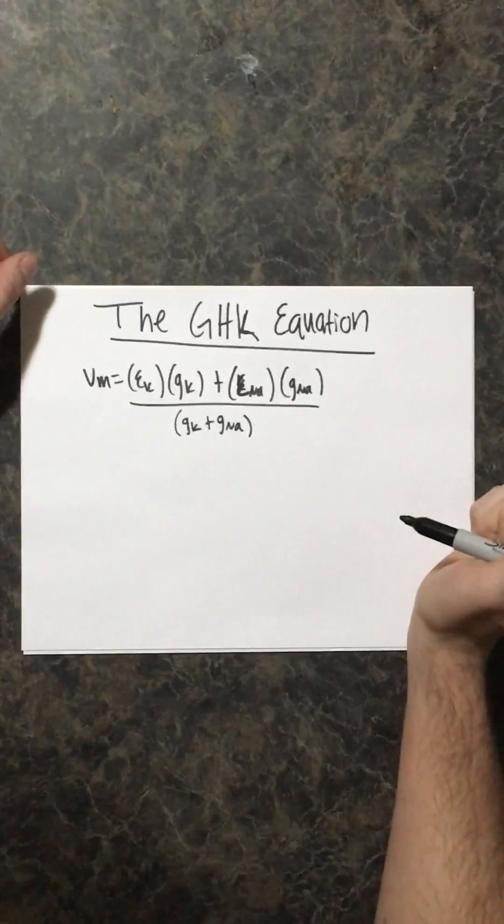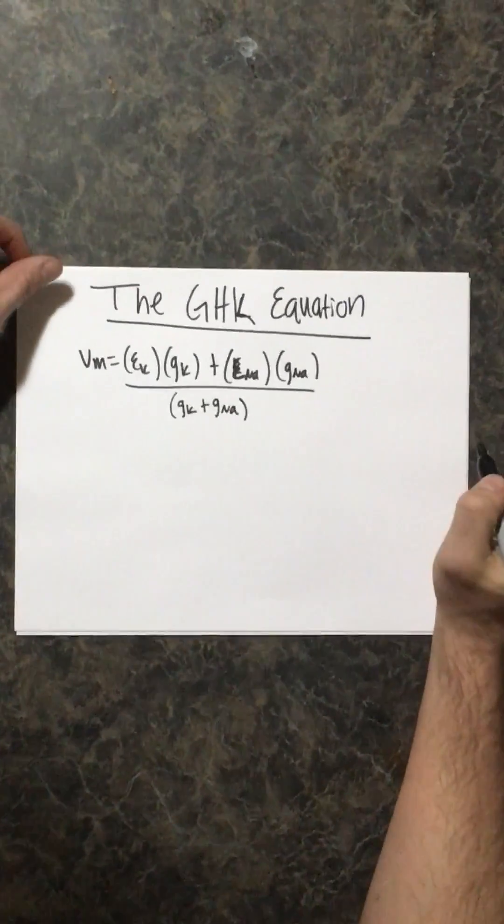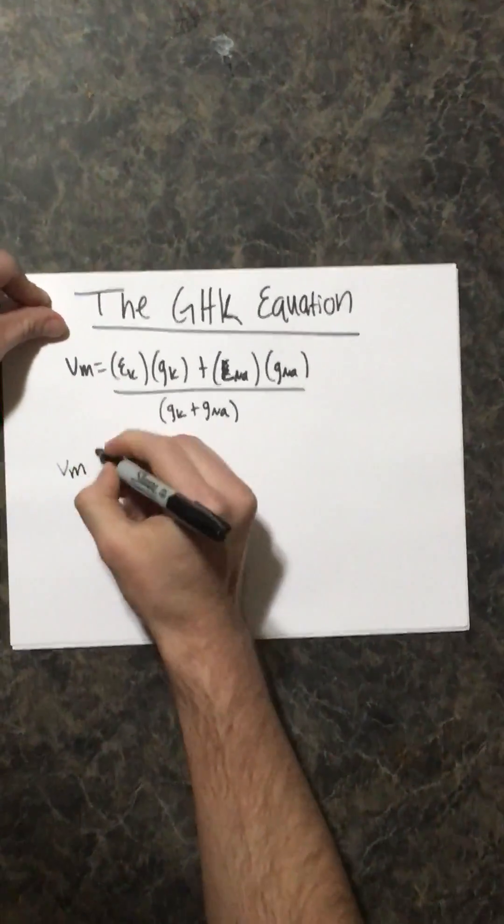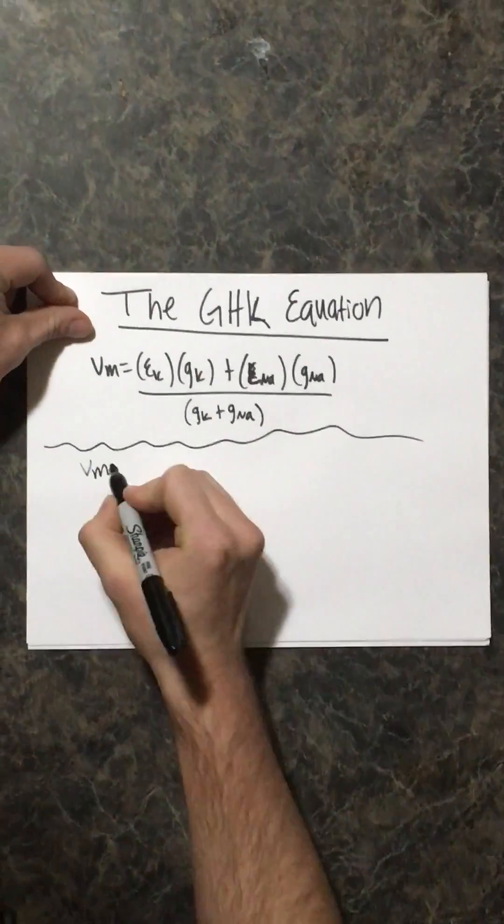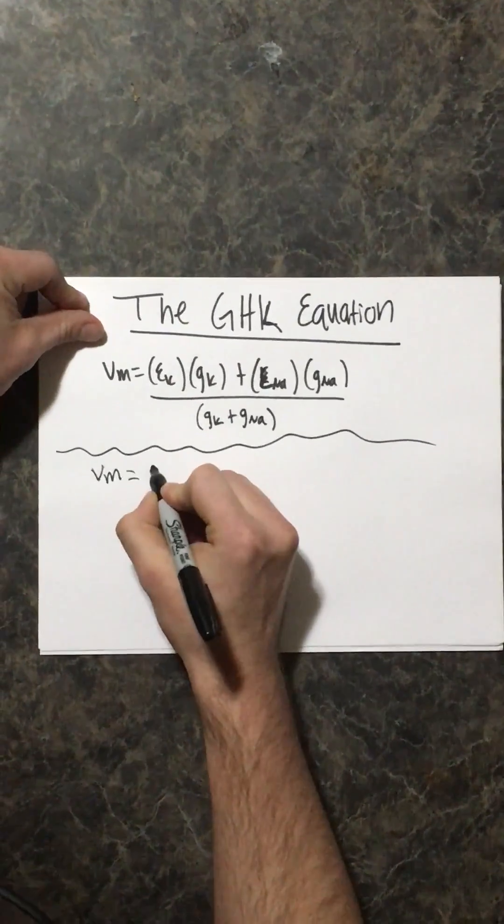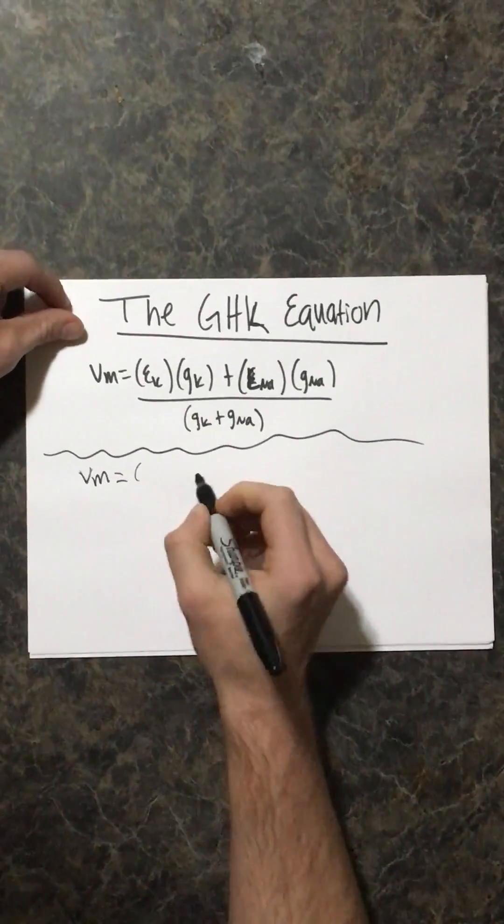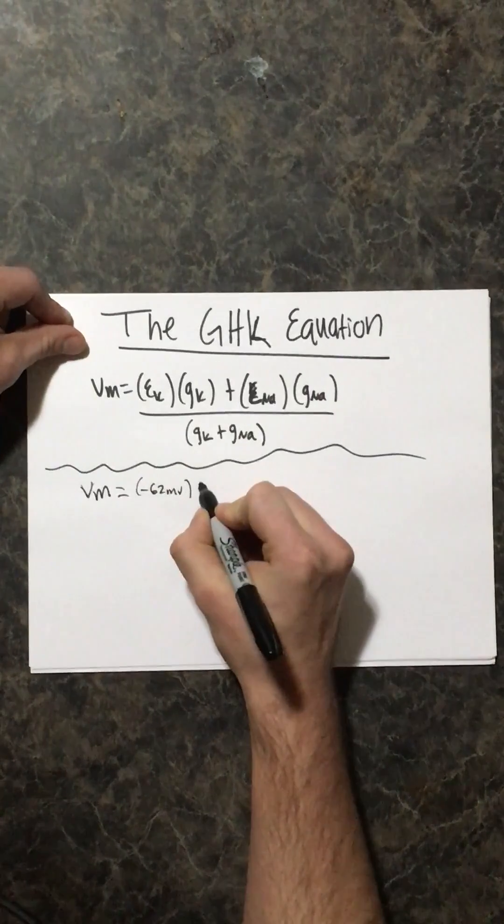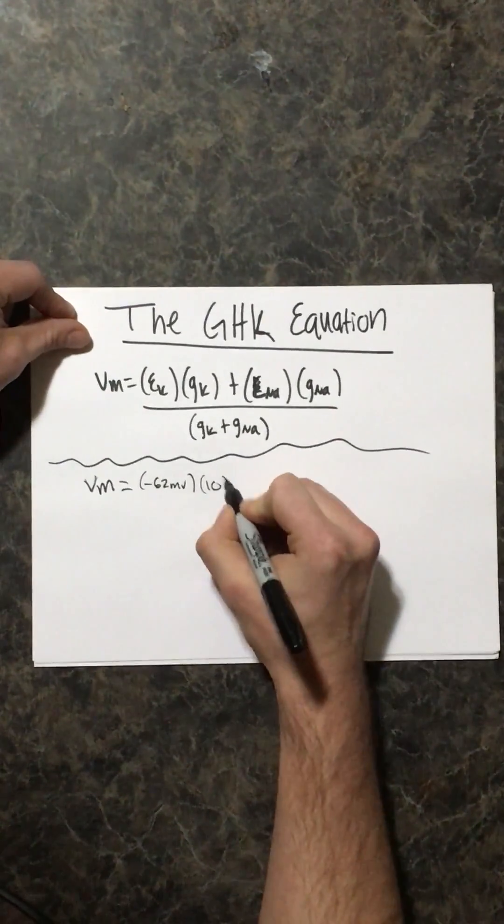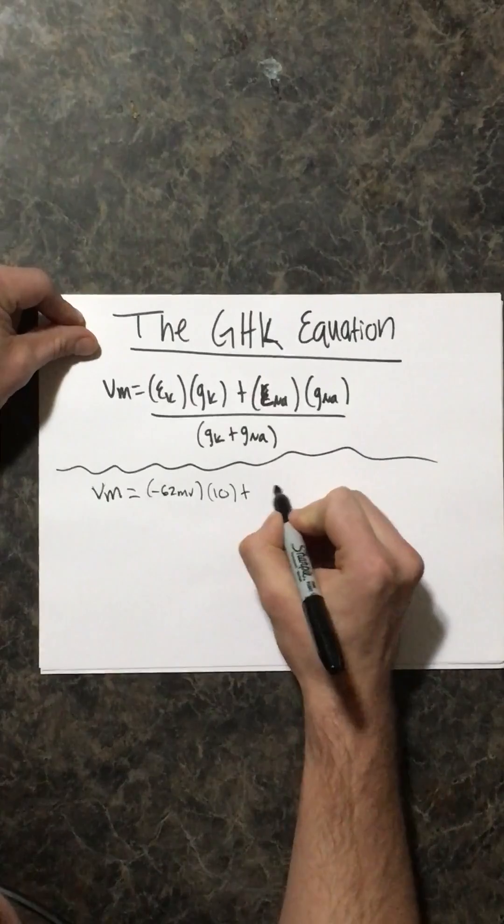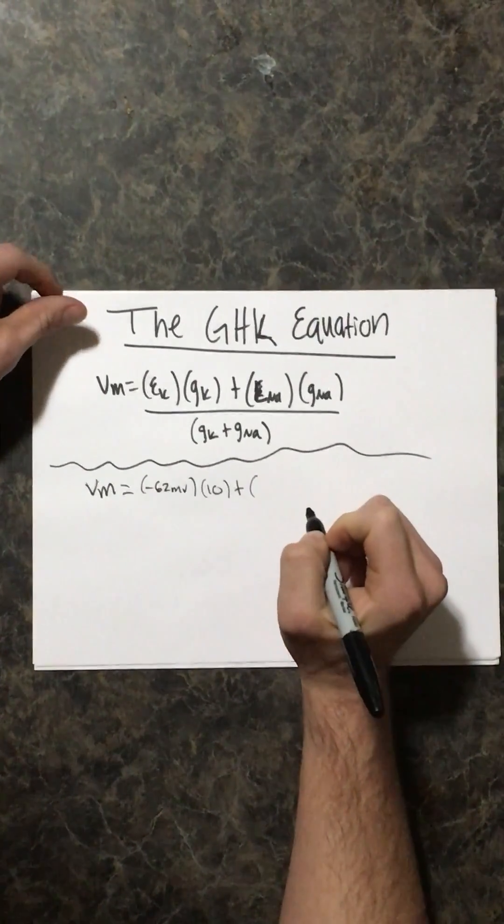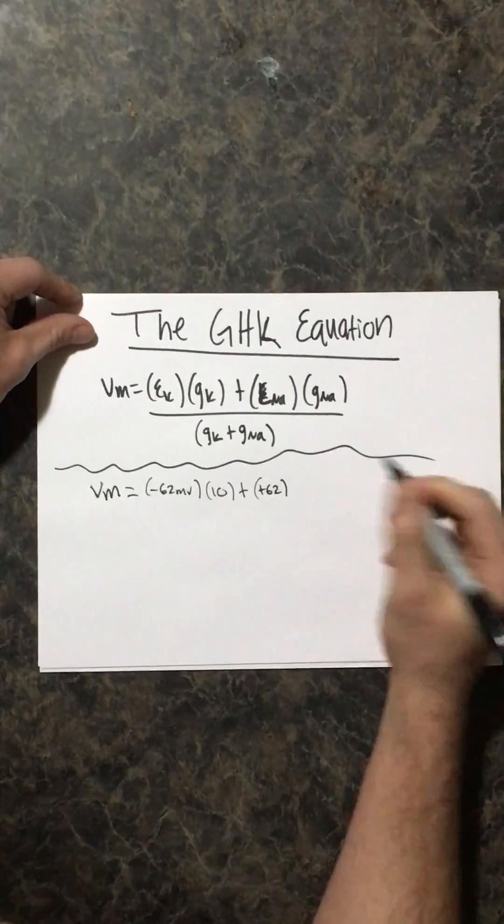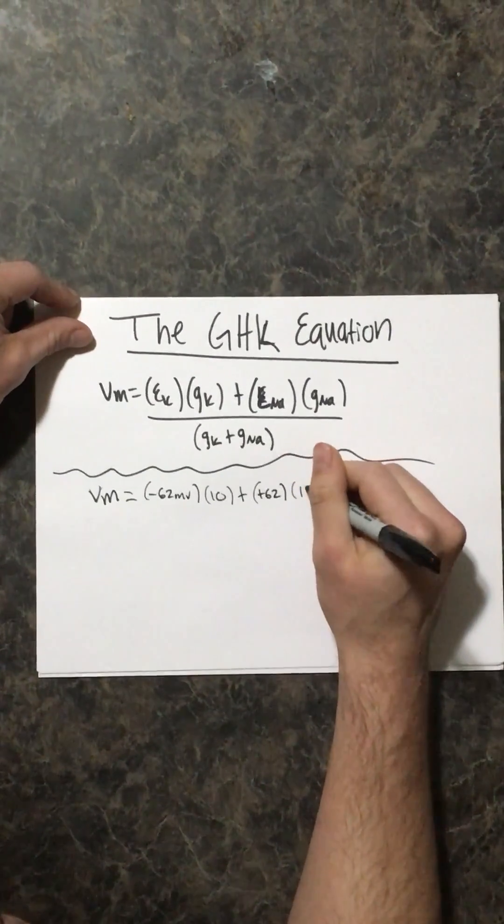So let's give you a practice problem with practice numbers and everything. So we'll calculate the resting membrane potential of potassium, which is at negative 62 millivolts, and has a conductance, or a G, of 10. There's your potassium. And also for sodium, which has a positive equilibrium potential, and a conductance of one.